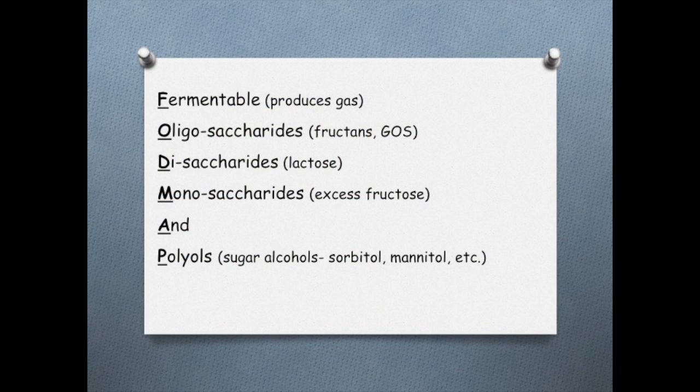The word FODMAP is an acronym that describes these poorly digested carbohydrates. It stands for fermentable oligosaccharides, disaccharides, monosaccharides, and polyols. Fermentable means that they produce gas. The oligosaccharides, or short chains of linked sugars, include fructans and GOS.